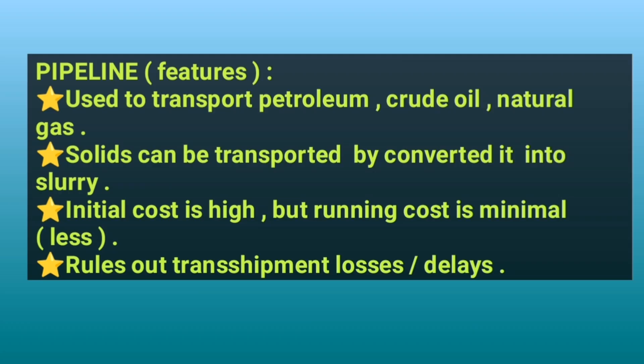Now for the advantages and features of pipelines. In ancient India, pipelines were used to transport water; nowadays they are used to transport petroleum, crude oil, and natural gas. Solids can also be transported by converting them into slurry first. The initial laying cost is high, but subsequent maintenance cost is very low. The main advantage is that it avoids transshipment losses and delays.